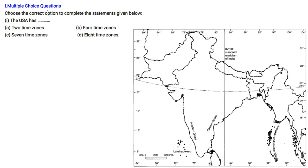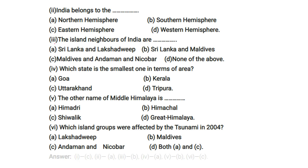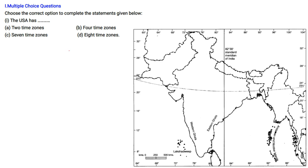Multiple choice questions: The USA has 7 time zones and Russia has 11 time zones.